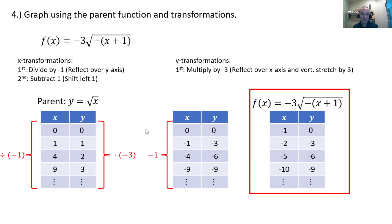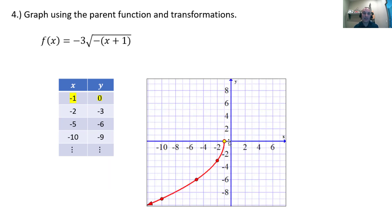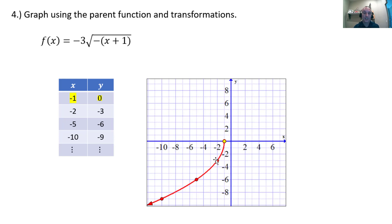This new table is the graph of the transformed square root function we started with. The reference point 0, 0 turned into negative 1, 0 on the transformed function. If we plot those points and understand the square root shape, the graph starts at the reference point and goes on forever in the other direction. The square root function typically starts at 0, 0 and goes up and to the right — but here it's been reflected over the y-axis, shifted left 1, reflected over the x-axis, and stretched vertically, making it taller. You can see all that evidence in the graph.